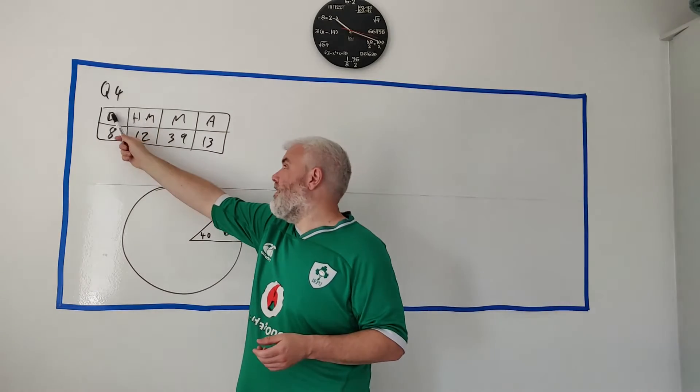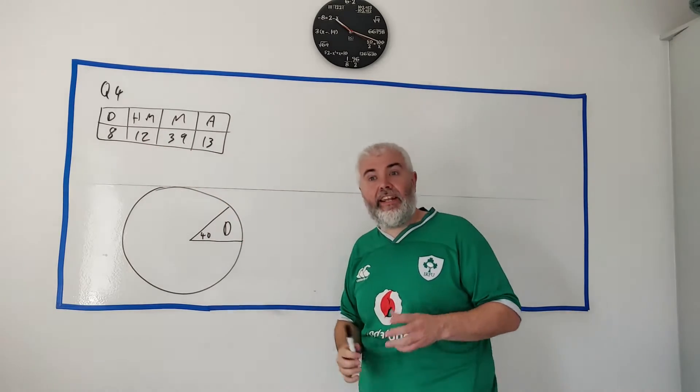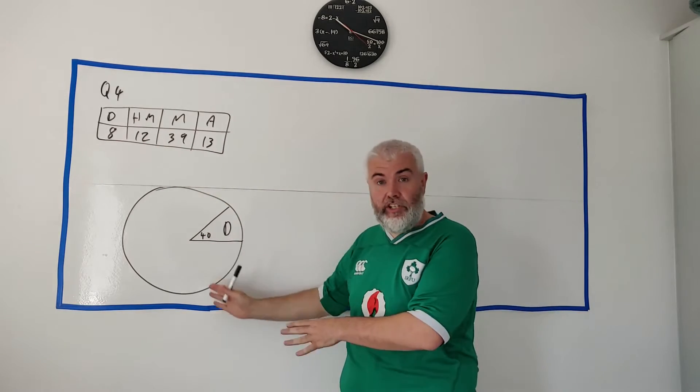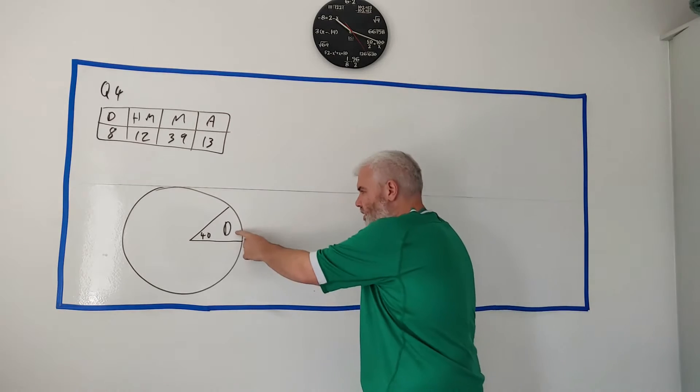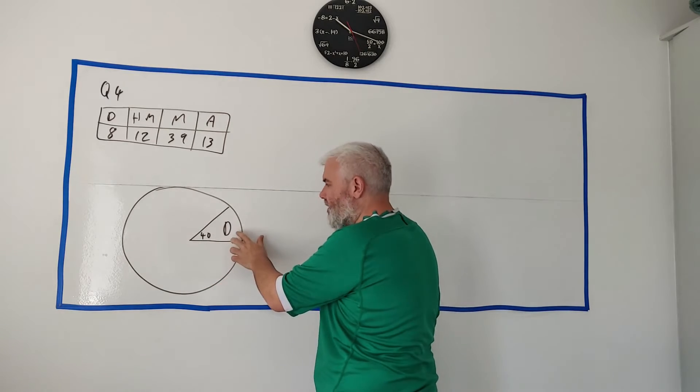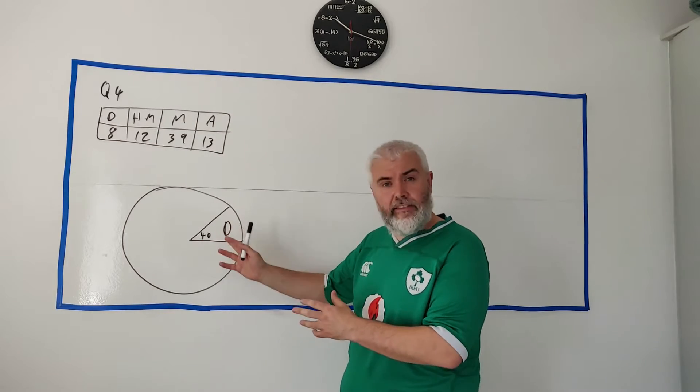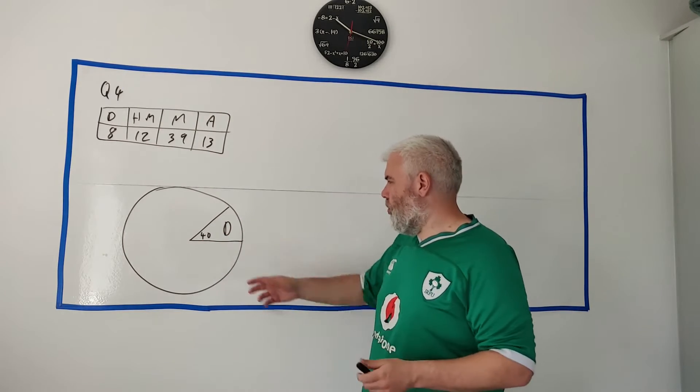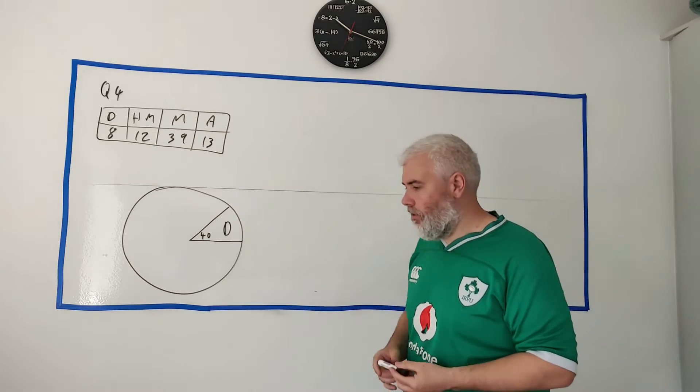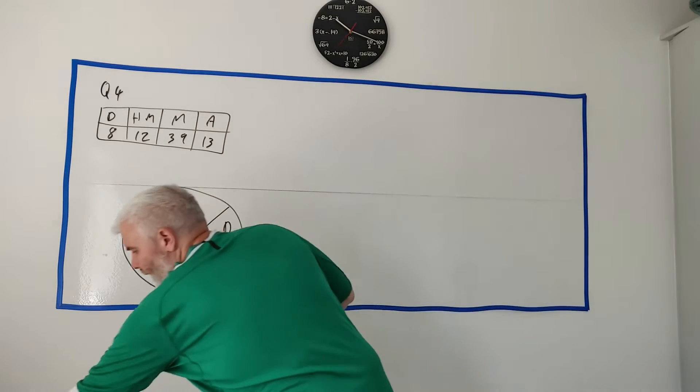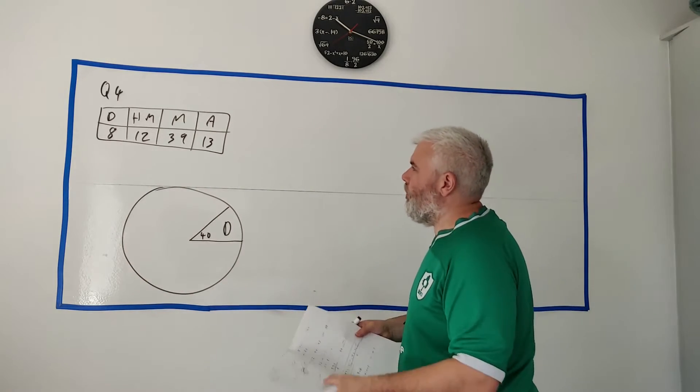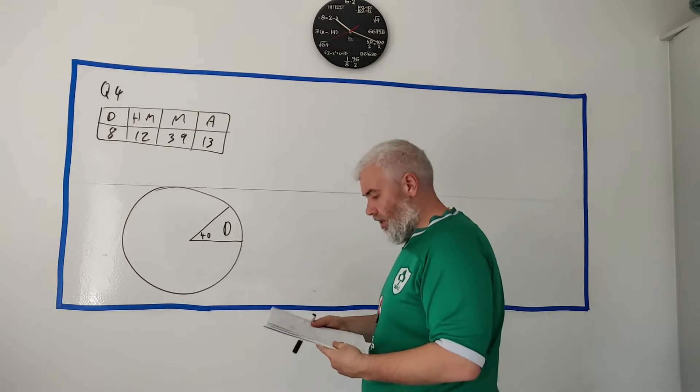What's this called? Distinction, high merit, merit and achievement, and they ask us to put it into a pie chart. Now they've started the pie chart for us, they didn't need to do this. So I'm going to show you how to do it if they didn't start it and then I'll show you maybe a little bit of help they gave us at the start.